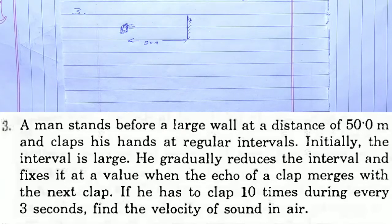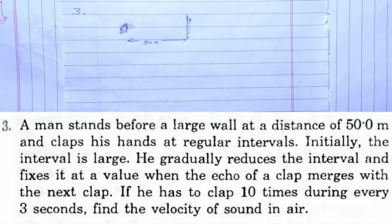Initially, the interval is large. He gradually reduces the interval and fixes it at a value when the echo of a clap merges with the next clap. If he has to clap 10 times during every 3 seconds, find the velocity of sound in air.